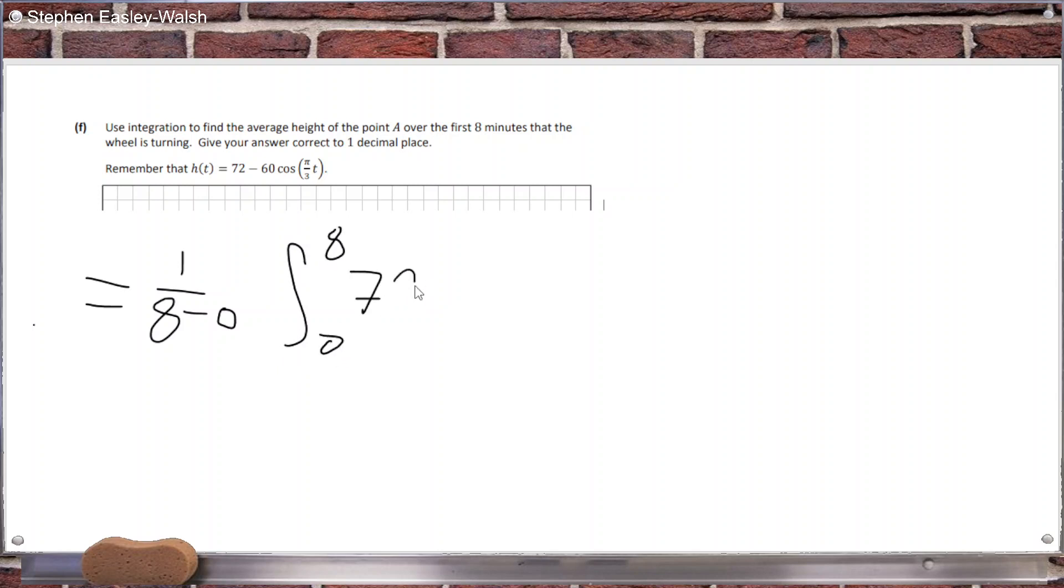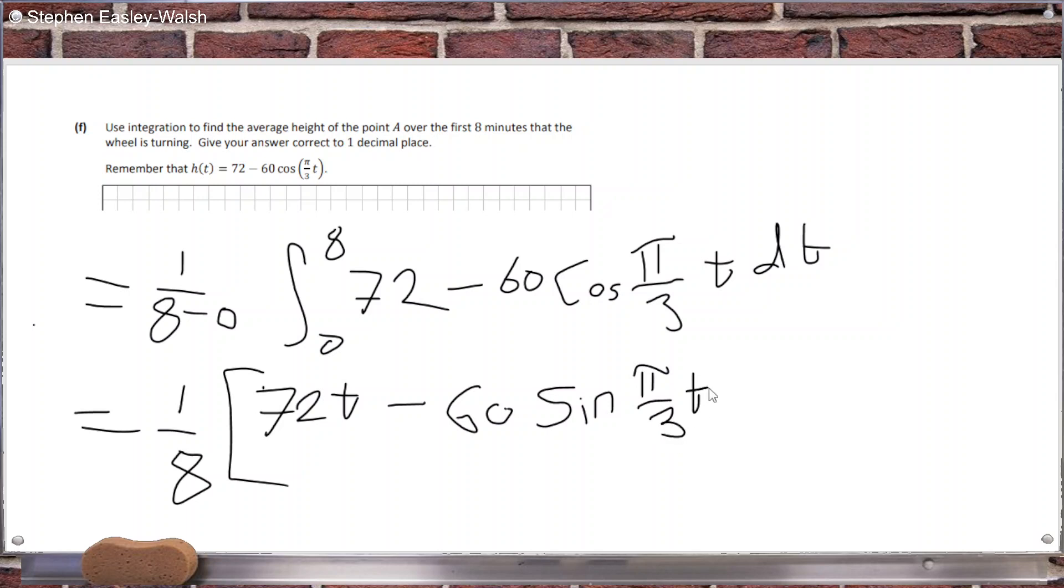72 minus 60 cos pi over 3t. Sorry, I don't have my pen with me, dt. So when that integrates, it's 1 over 8, 72t minus 60, sine pi over 3. And I wrote cos, but even though I typed in sine on the calculator, over pi over 3, and then you sub in the two values,